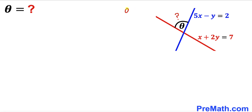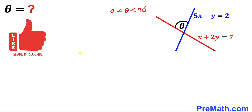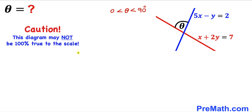angle theta is in between 0 and 90 degrees — in other words, this angle theta is an acute angle. Please don't forget to give a thumbs up and subscribe, and please keep in mind that this figure may not be 100% true to scale.